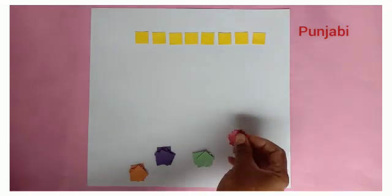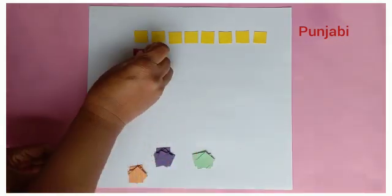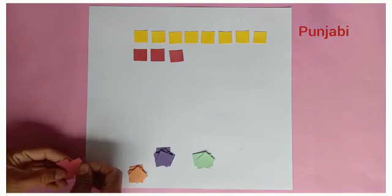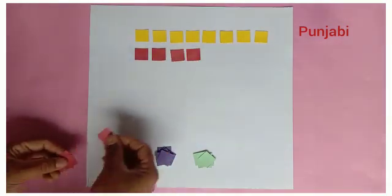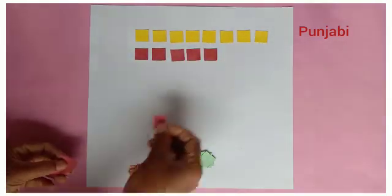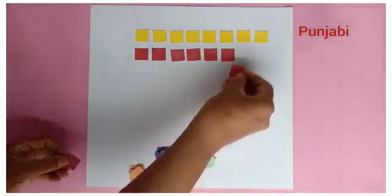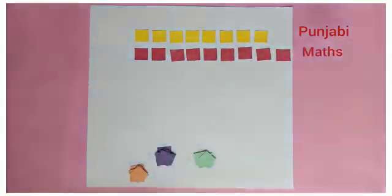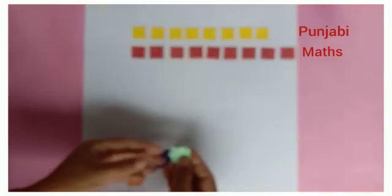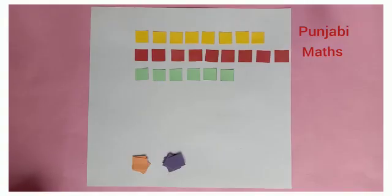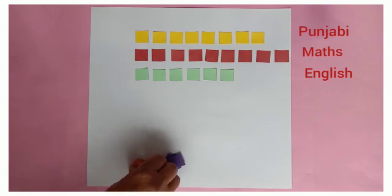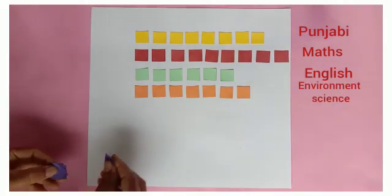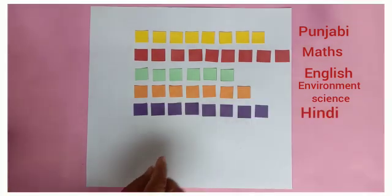Students, now let's see how much he scored in math subject: 10, 20, 30, 40, 50, 60, 70, 80 and 90. He scored 90 marks. Like this, Gurpreet scored 60 marks in English, 70 marks in environment science, and 80 marks in Hindi subject.